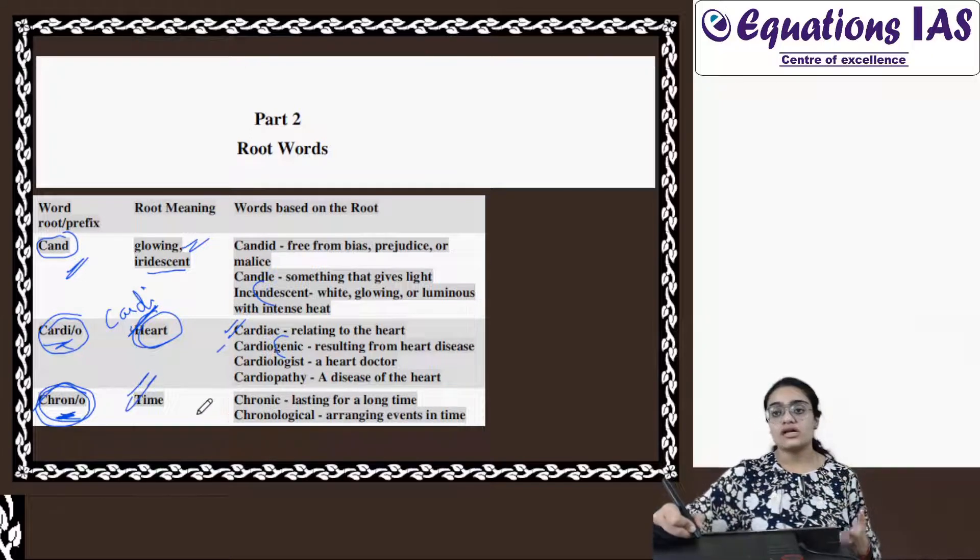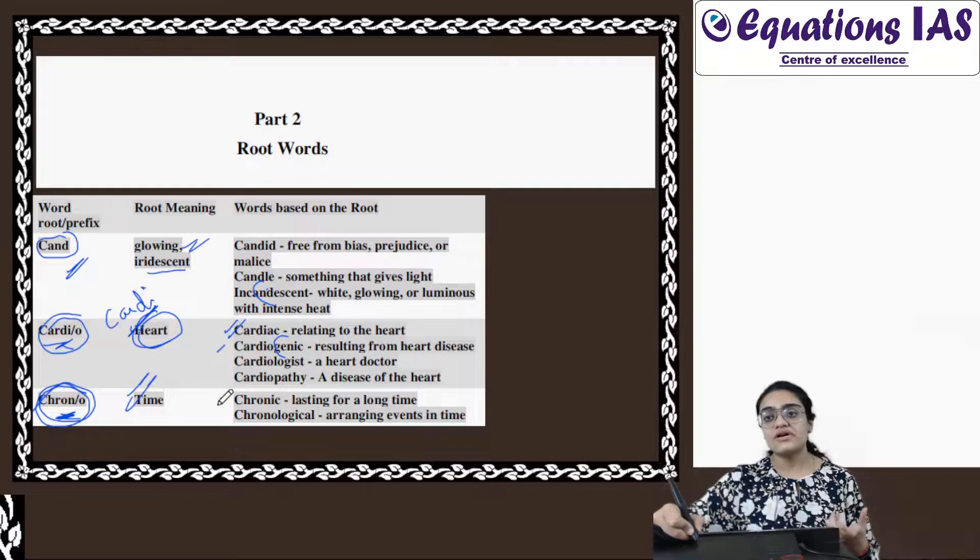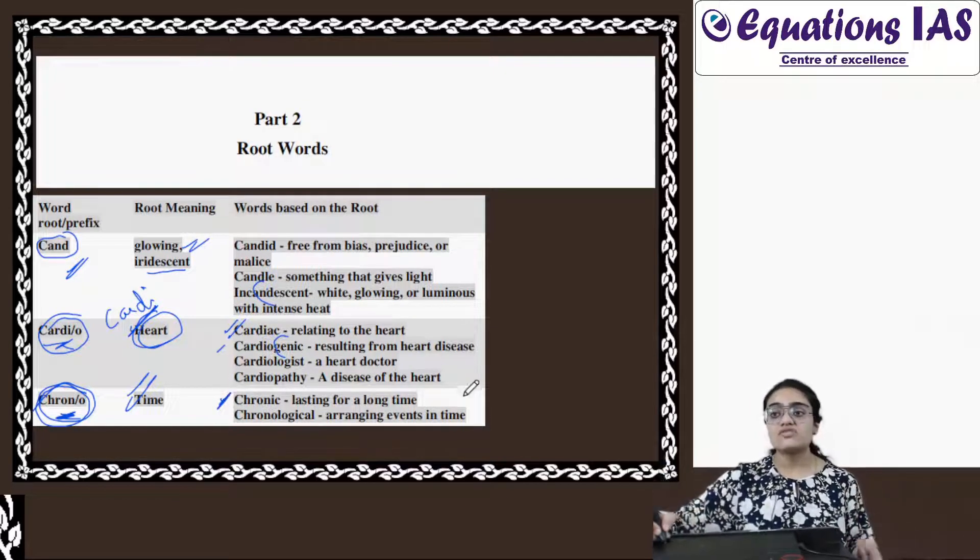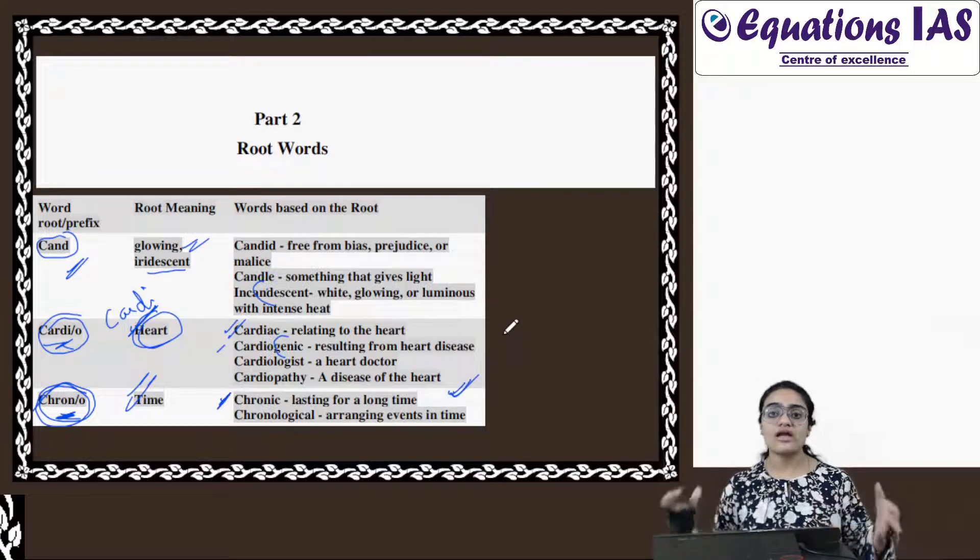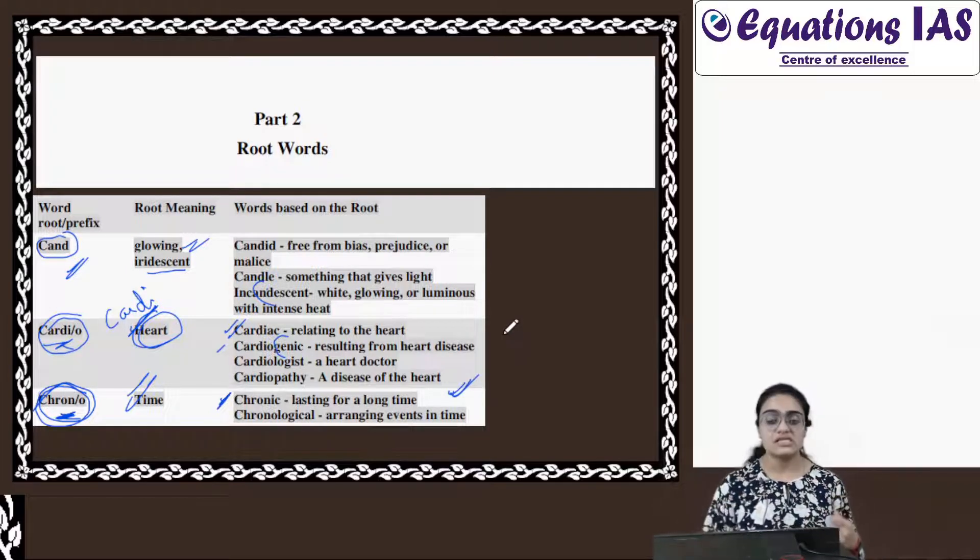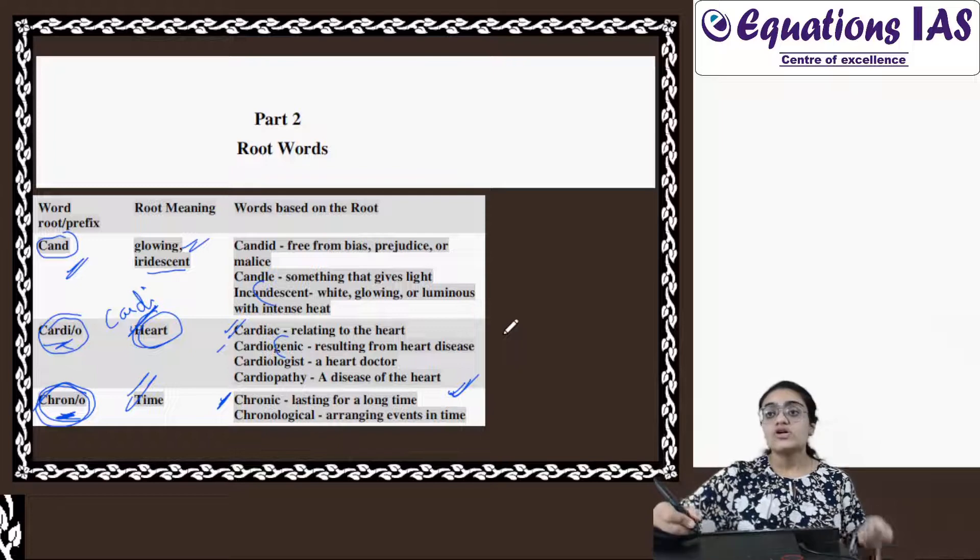For instance, chronic. The first word is chronic. Chronic ka matlab kya hota hai? Something which lasts for a long time. So long time tak rehta hai. Chronic disease, chronic affair, right?